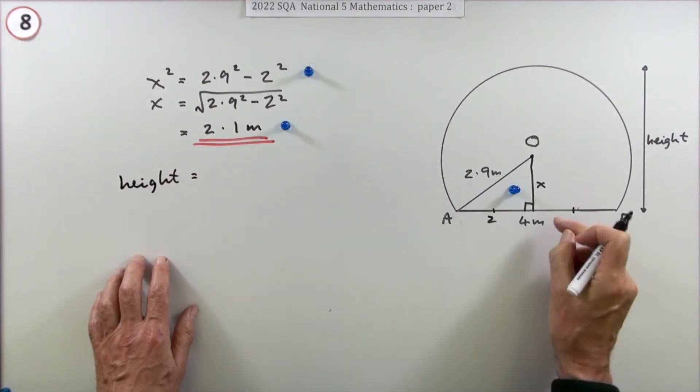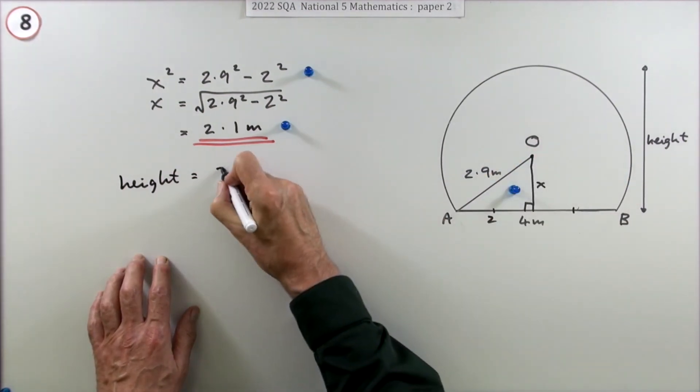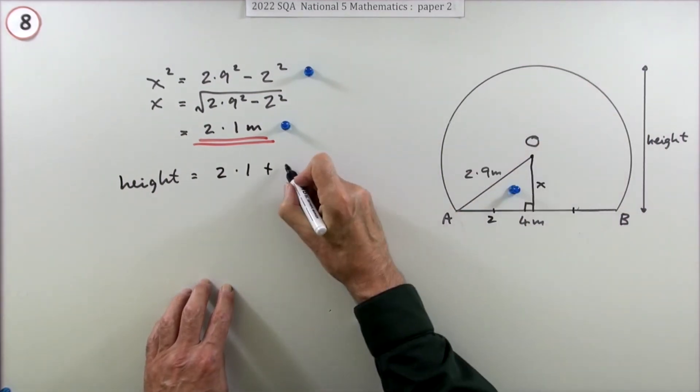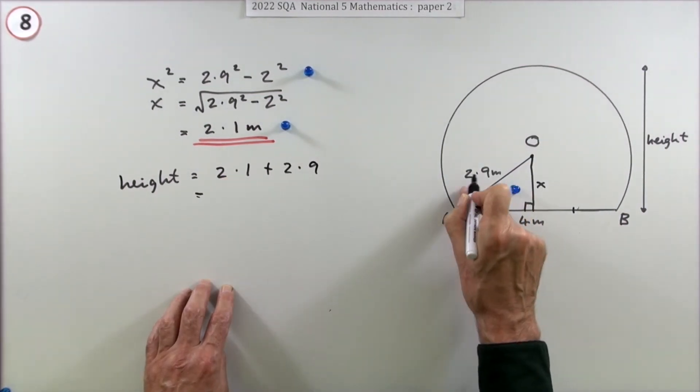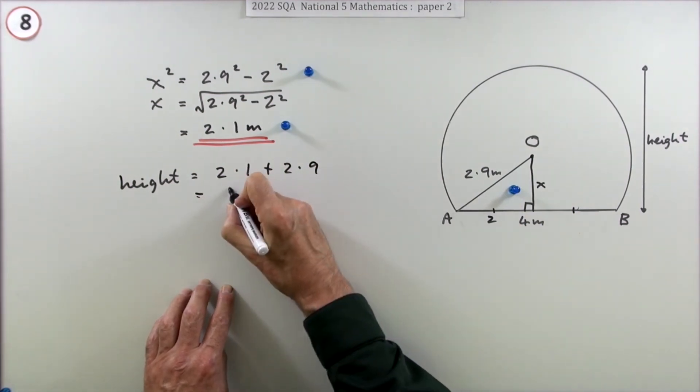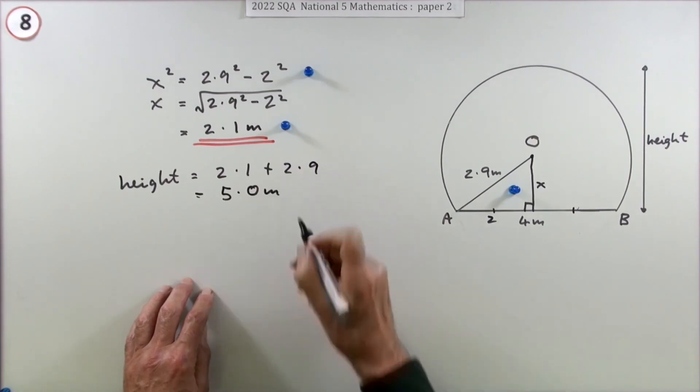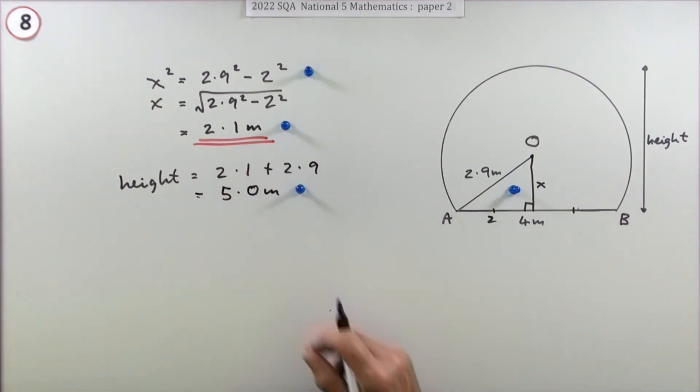That just leaves one more mark for getting the overall height. The overall height will be 2.1m up to the center, and from the center to the top is another lot of the radius, another 2.9m. That makes exactly 5 meters—I'll say 5.0 meters. Putting down 5 is good enough for the final mark.